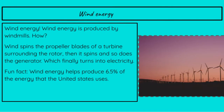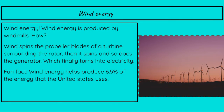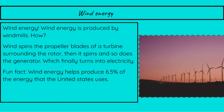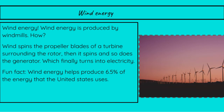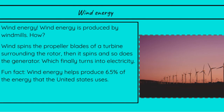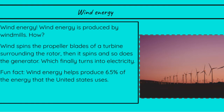Wind energy is produced by windmills. Wind spins the propeller blades of a turbine surrounding the rotor. Then it spins, and so does the generator, which finally turns into electricity. Fun fact: wind energy helps produce 6.5% of the energy that the United States uses.